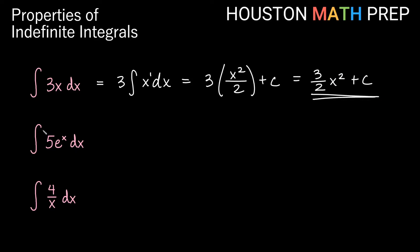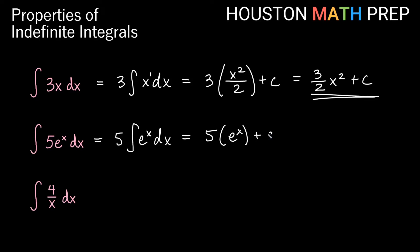For the next one, the integral of 5e to the x dx is the same as 5 times the integral of e to the x dx. The antiderivative of e to the x is just e to the x itself. So this gives us 5e to the x plus c.